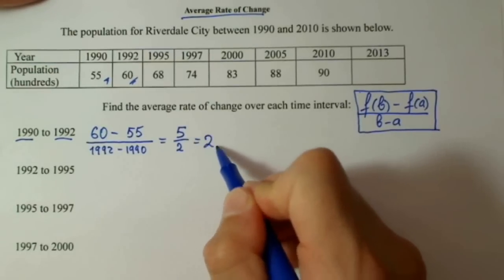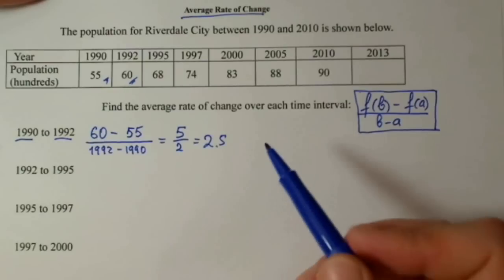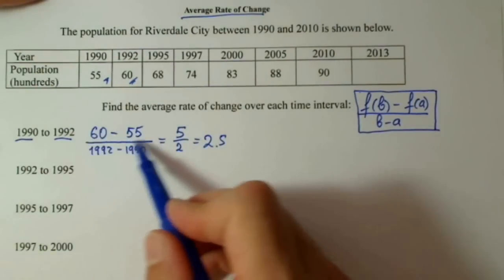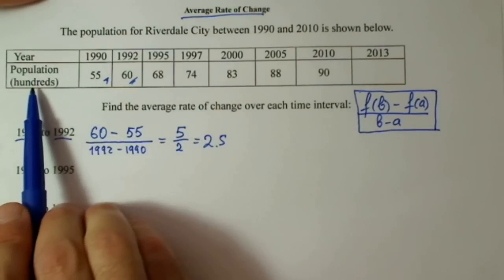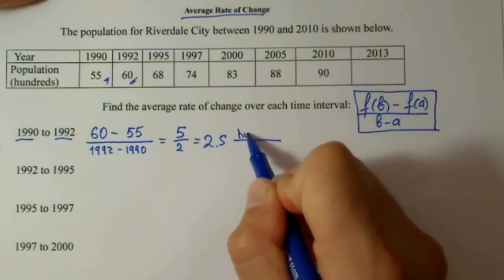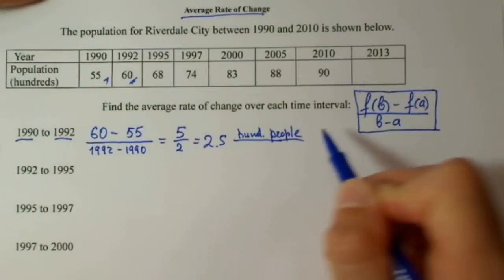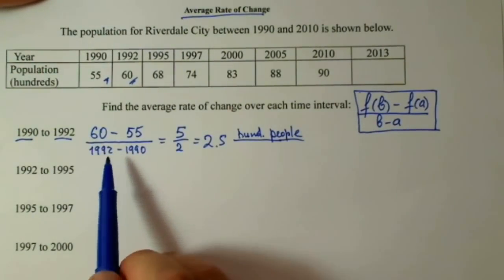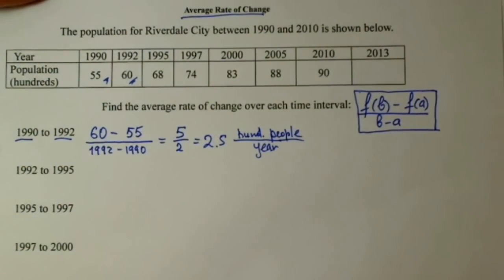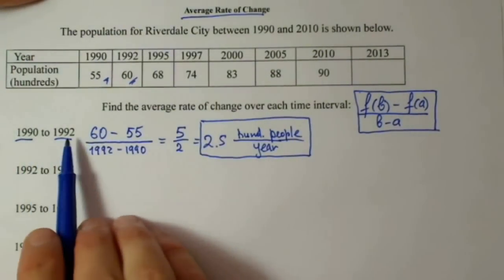So the result is 2.5. We have to always include units — don't forget about this. Our units of output are hundreds of people, and the units of input are years. So the average rate of change on the time interval between 1990 and 1992 is 2.5 hundreds of people per year.